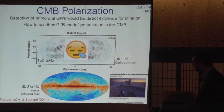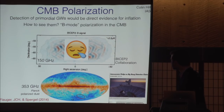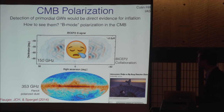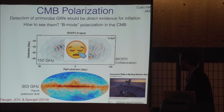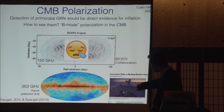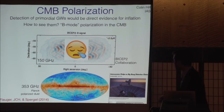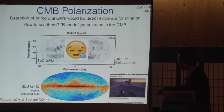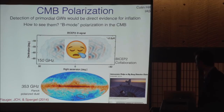Shortly after that announcement, myself, Raphael Flauger — who was a member here at the time — and David Spergel, a professor at Princeton who was my PhD advisor, looked into this claim in detail and showed that the signal looked to be consistent with foreground emission from polarized dust in our galaxy. This was later confirmed by the Planck collaboration using maps of the sky at a different frequency where dust emission is stronger. The region the BICEP team observed was not as clean of dust as they had hoped, and this led to them essentially retracting their claim of detection.